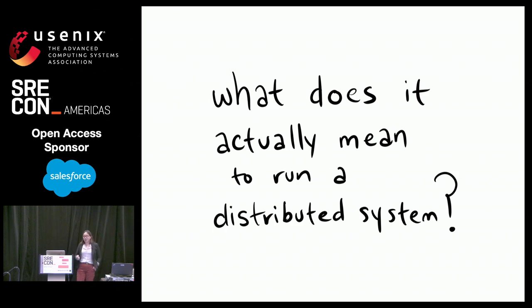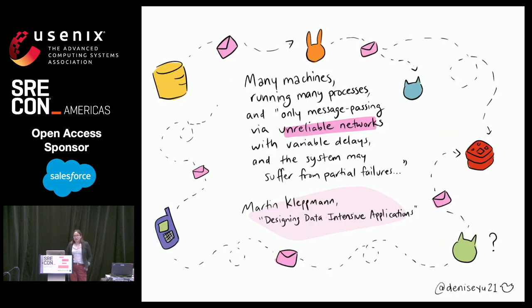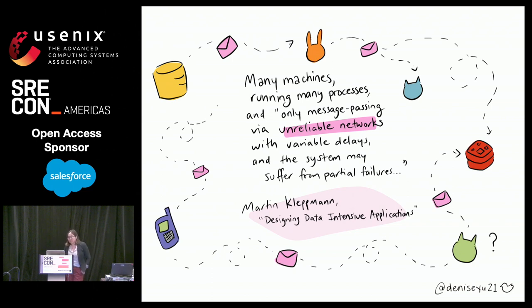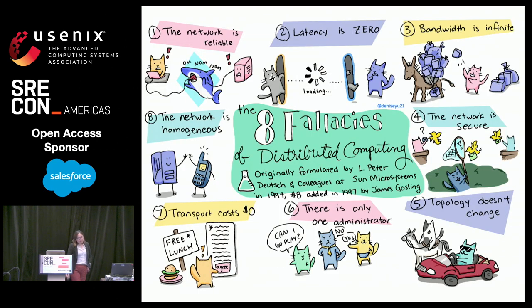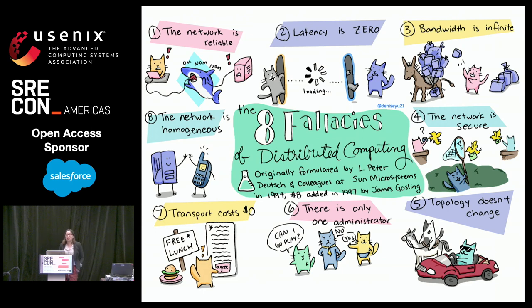So what does it actually mean to run a distributed system? Martin Kleppmann, in the book Designing Data-Intensive Applications, wrote that given a shared-nothing architecture, you have many machines running many processes and only message passing via unreliable networks with variable delays, and the system may suffer from partial failures. Distributed computing is really, really hard to reason about, and it's easy to make wrong assumptions about how the world works.